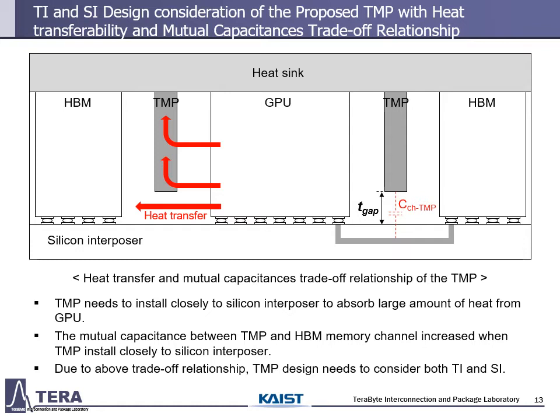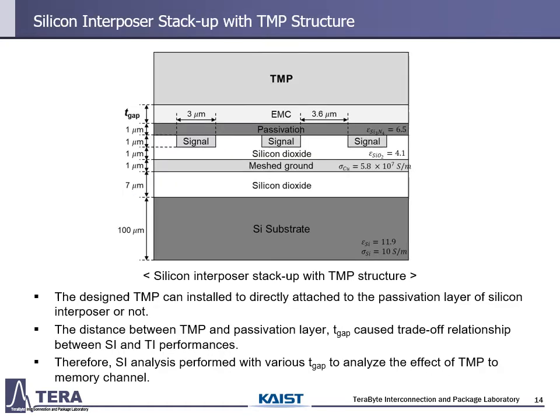The TI performance of TMP is such that a smaller T-gap has higher TI performance, and the channel characteristics change with temperature. The temperature-dependent SI analysis will be depicted as a trend compared to SI analysis at room temperature. Therefore, we first analyze SI of silicon interposer memory channel considering the gap distance between TMP and silicon interposer at room temperature. Then, we analyze temperature-dependent SI reflecting the operating temperature from 3D thermal simulation, to show the difference between SI design with and without temperature consideration. This is the silicon interposer stack-up with TMP structure for 3D EM simulations, where SI analysis is performed with various T-gap values.